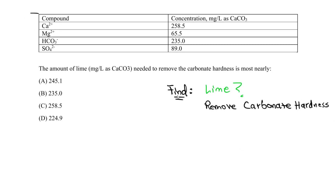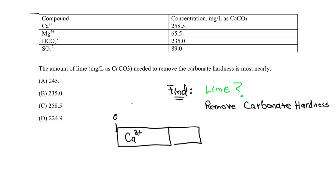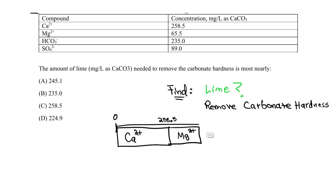First, let's draw our bar diagram. We have calcium starting at zero and magnesium next to it. Calcium concentration is 258.5 mg/L as CaCO₃, and magnesium is 65.0, so the total going left to right is 258.5 + 65.5 = 324 at the far end. At the bottom we place the anions — bicarbonate and sulfate — starting at zero to the right.